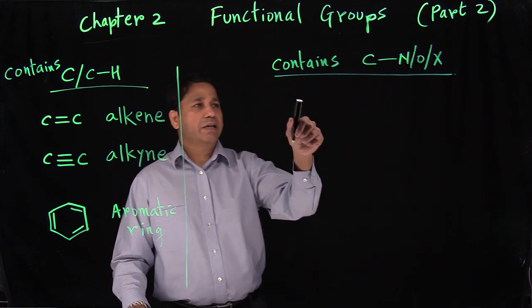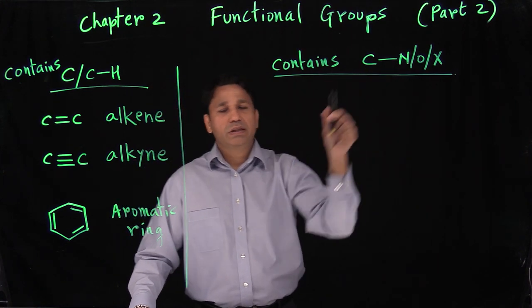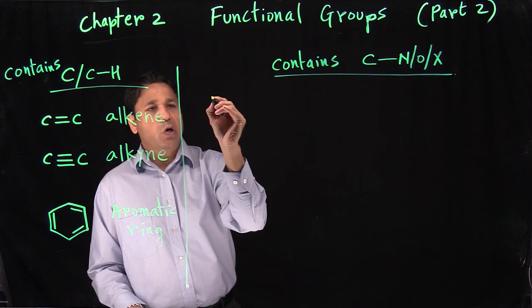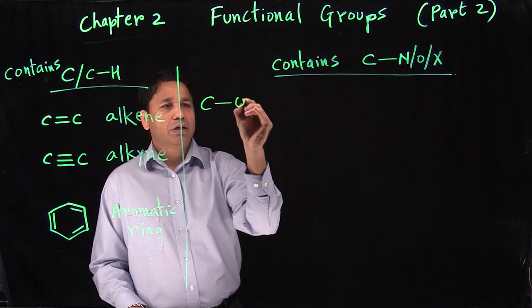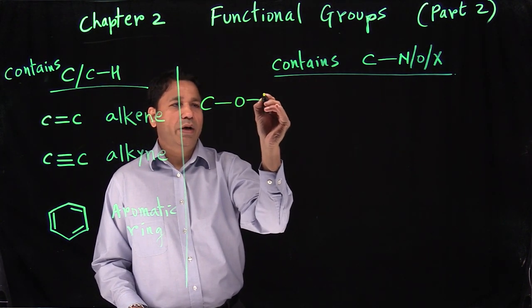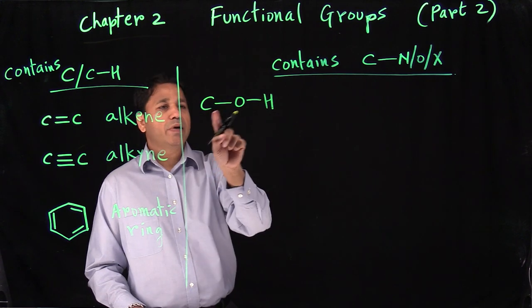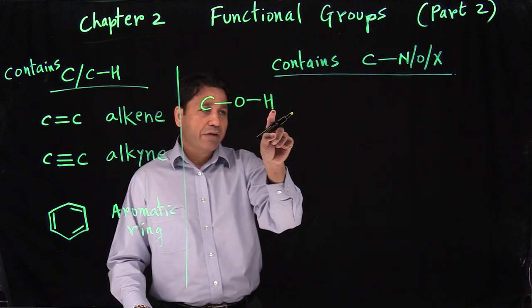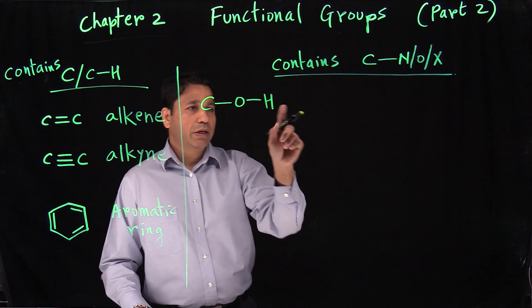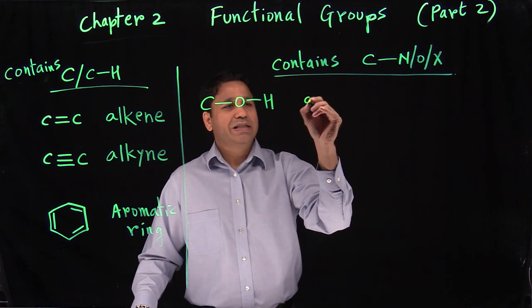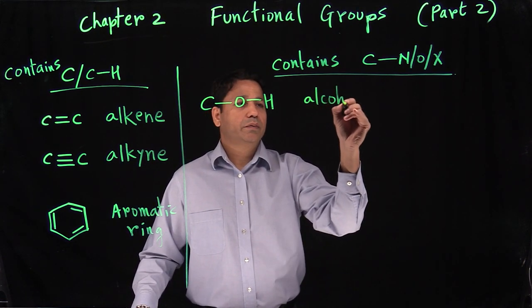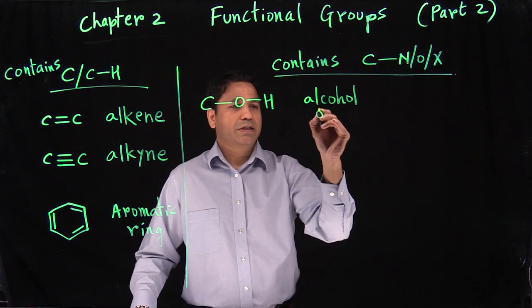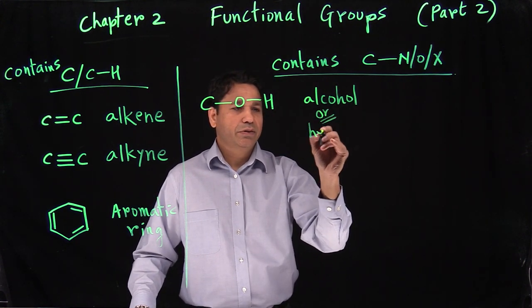In the second category, we have carbon bonded with oxygen and nitrogen. Let's say we have carbon bonded with OH — carbon bonded to oxygen, and oxygen has a hydrogen on the other side. This functional group is alcohol, also called the hydroxy group.